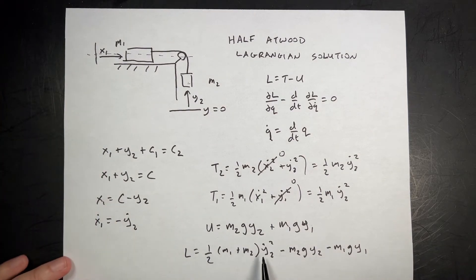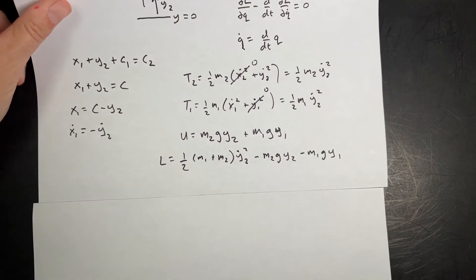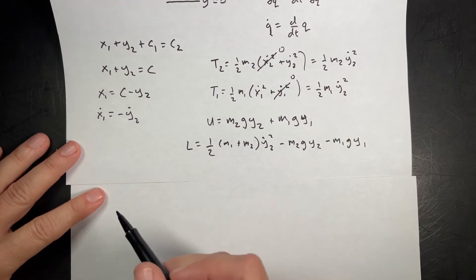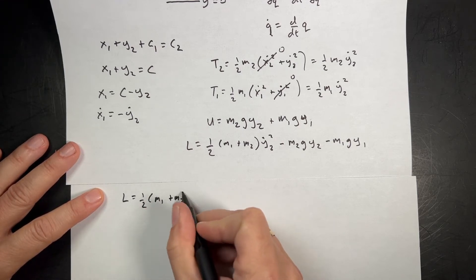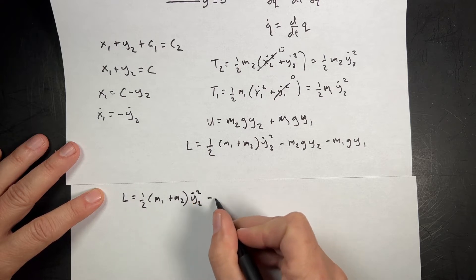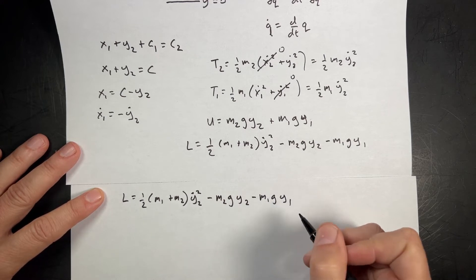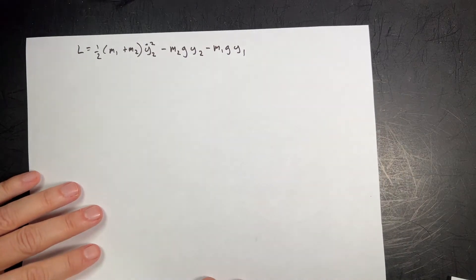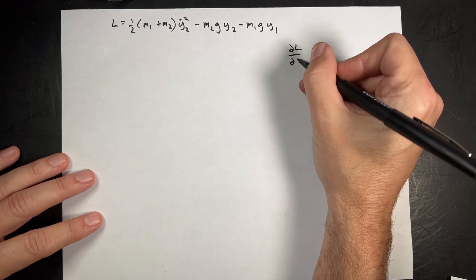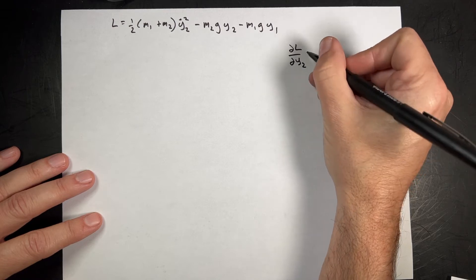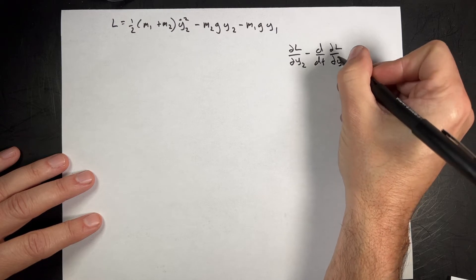That's my Lagrangian. I only have one variable, y2, so I only need one of these Lagrange equations. Let me rewrite the Lagrangian: L equals one-half (m1 plus m2) y2 dot squared minus m2 g y2 minus m1 g y1. Now I can use the Lagrangian equation.